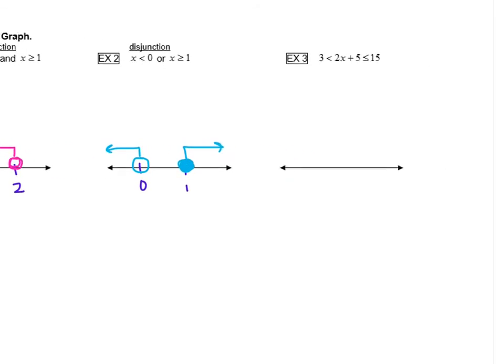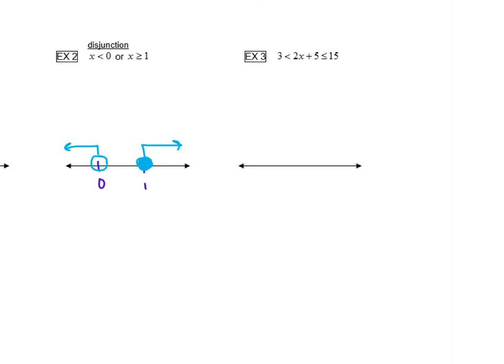All right, last example here. Now this one doesn't tell us if it's an and or an or. But just get a feel for what this looks like. We have three sections here. Your left, your middle, your right. This is an and, an inequality, or a conjunction. We're not ready to graph this because this x has a 2 and a 5 with it. So we want to solve for x in the middle here and get that x by itself.